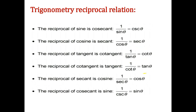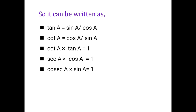The reciprocal of cot theta is tan theta: 1 by cot theta equals tan theta. The reciprocal of secant theta is cos theta: 1 by secant theta equals cos theta. The reciprocal of cosecant theta is sine theta: 1 by cosecant theta equals sin theta. Based on these reciprocal relations, tan A equals sin A by cos A, cot A equals cos A by sin A, cot A times tan A equals 1, secant A times cos A equals 1, and cosecant A times sin A equals 1.